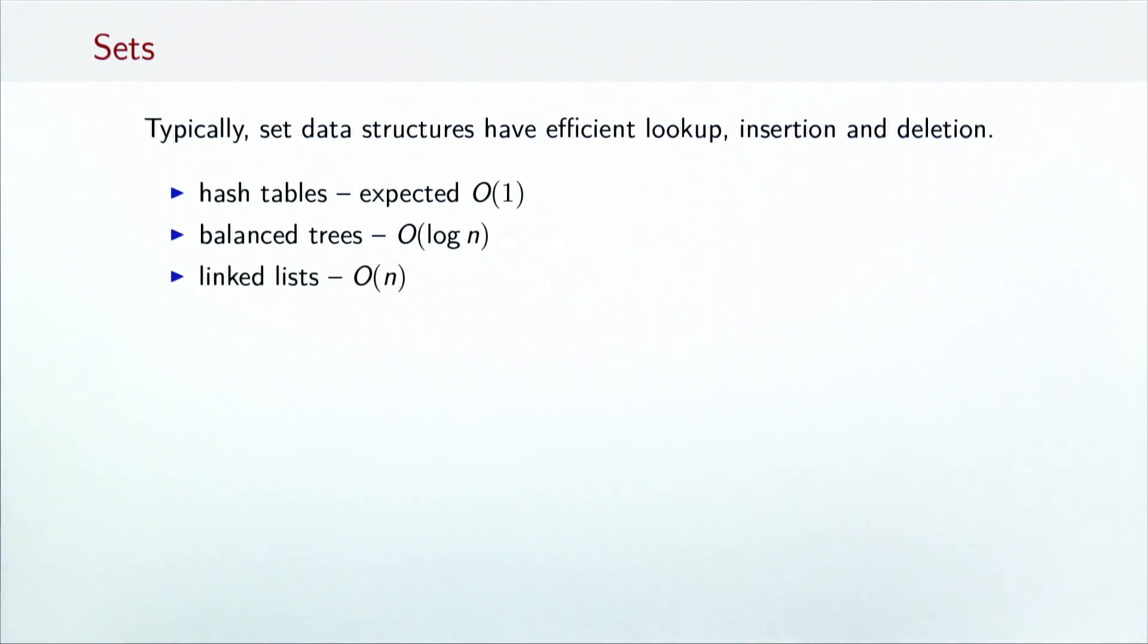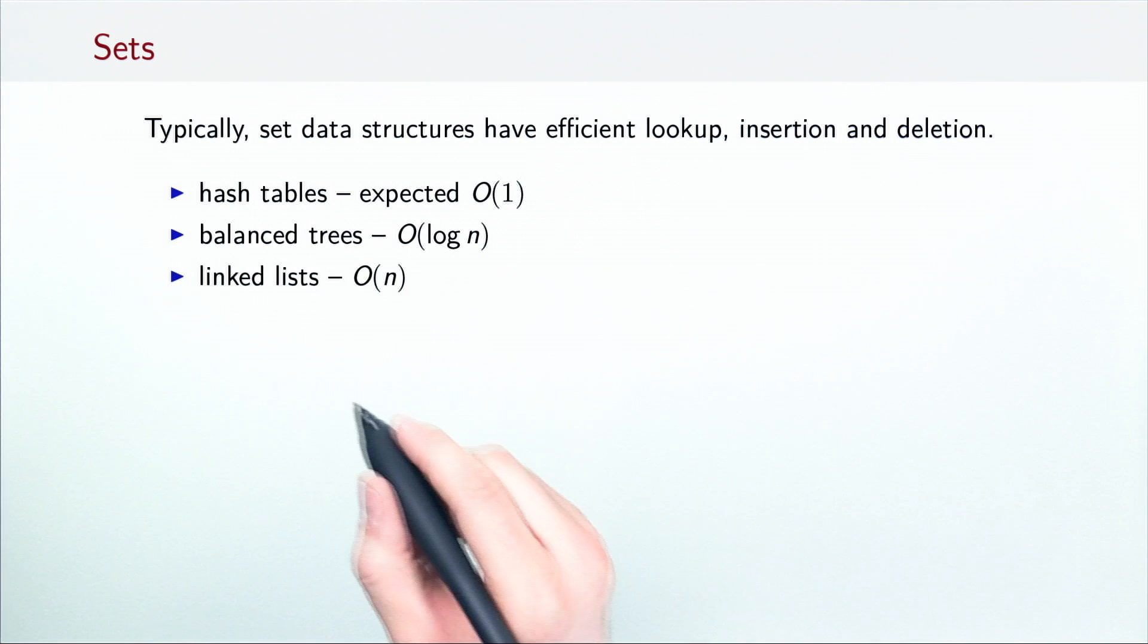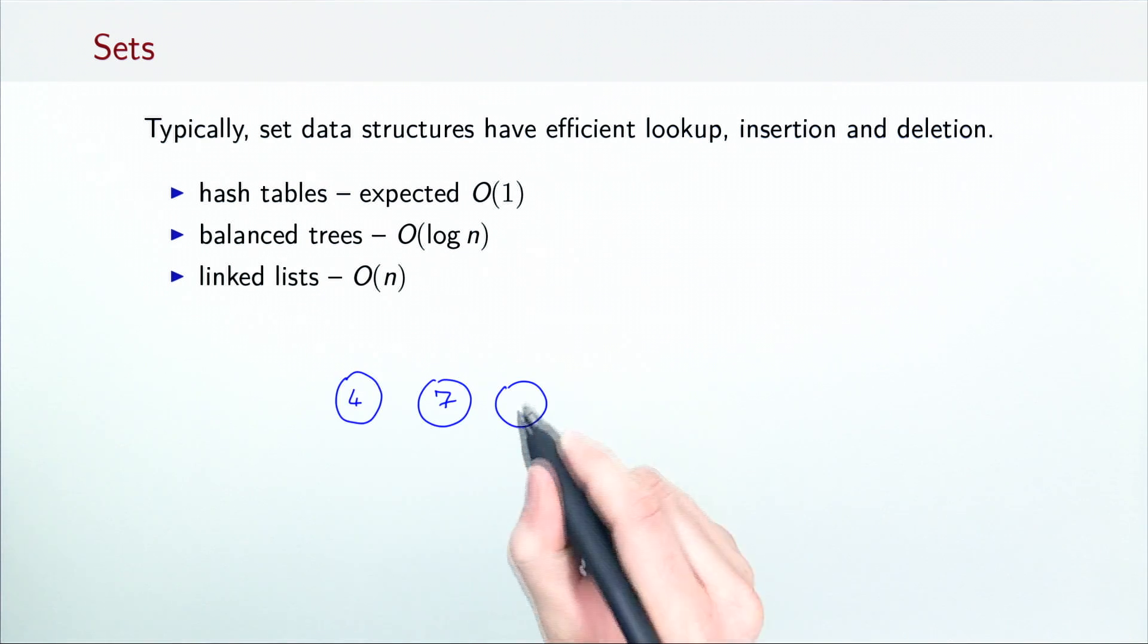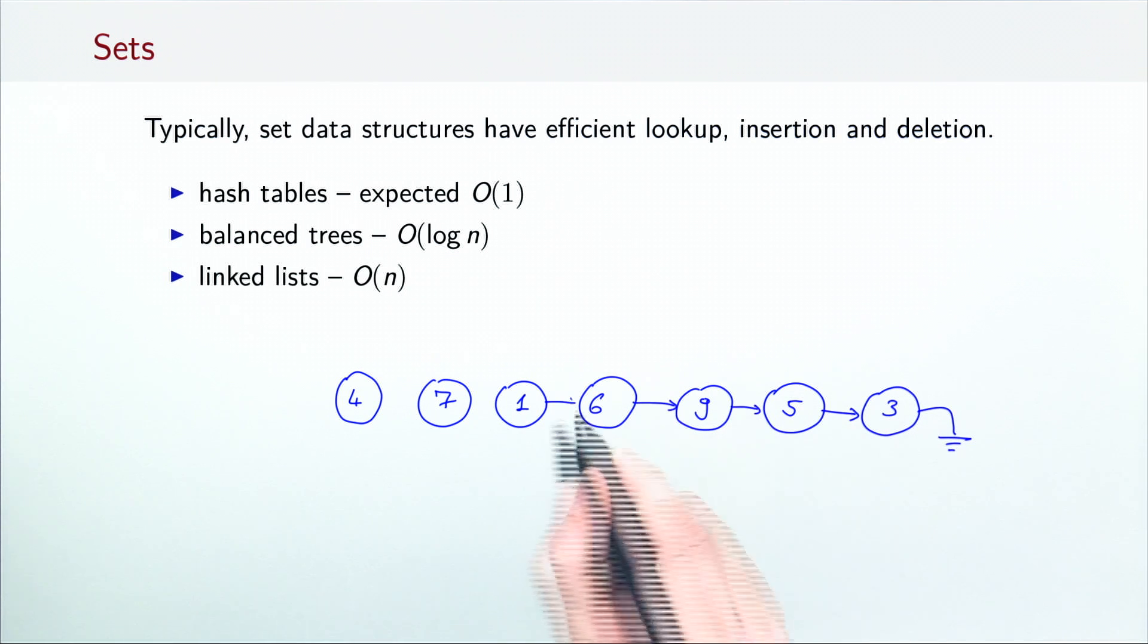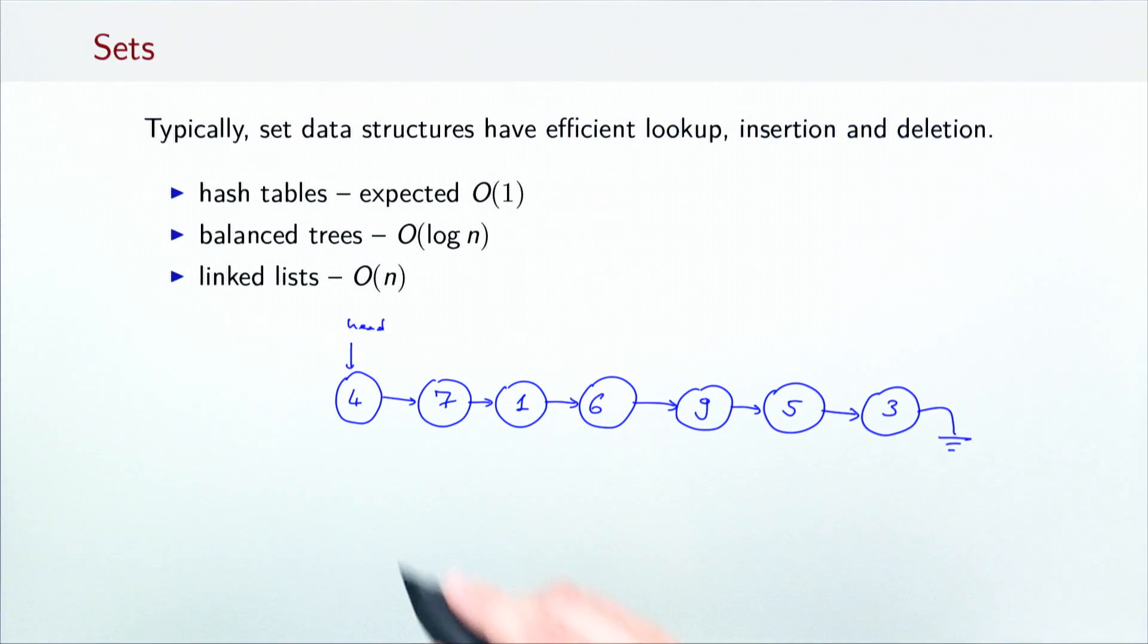A linked list is a linear arrangement of nodes, where each node except the last one has a single successor. Finding the element in the list requires traversing the entire list in the worst case, so the running time of their operations is O(n). So, for example, if we want to check that the element 9 is in the shown list, we have to traverse half the elements in the list.